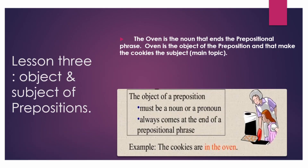Our third lesson is about the object and subject of a preposition. The object of the preposition must be a noun or a pronoun and always comes at the end of a prepositional phrase. For example: 'The cookies are in the oven' — 'oven' is the noun that ends the prepositional phrase, making it the object of the preposition, while 'cookies' is the subject and the main topic.